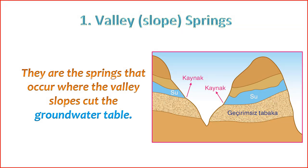Valley Springs: A valley slope spring, also known as a hillside spring or hillside seep, is a type of spring that emerges along the slopes of valleys or hillsides. 1. Formation — valley slope springs form when groundwater, which has percolated through permeable rock or soil layers, reaches the surface along the slope of a valley. The emergence of the spring is influenced by the intersection of impermeable and permeable layers.